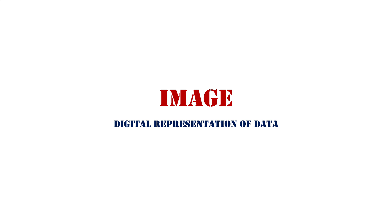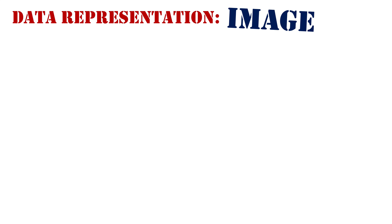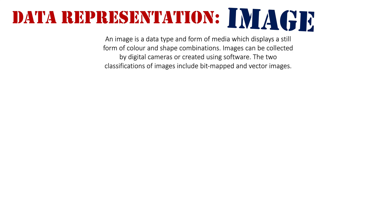Digital representation of data — image. We are going to take a look at images today. Images fall into two categories. An image is a data type and a form of media which displays a still form of color and shape combinations.